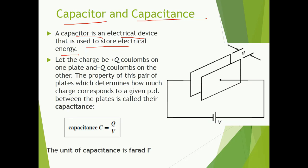When we have two parallel plates — one having positive charge, let us assume plus Q coulombs, and the second having negative charge of the same value, minus Q coulombs — they are separated by a distance d. Then a voltage is going to be built up between these two parallel plates, and this property is known as capacitance. Capacitance is given as Q by V, where Q is the charge and V is the potential. The unit of capacitance is farad, denoted by capital F.